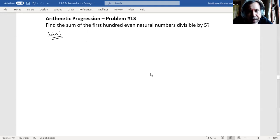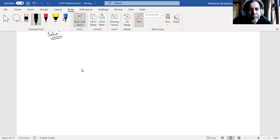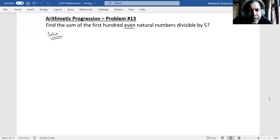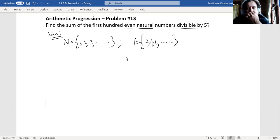There are three conditions: even, natural, and divisible by 5. Natural numbers are 1, 2, 3, and so on up to infinity. Even numbers are 2, 4, 6, and so on up to infinity.